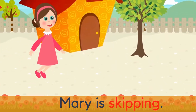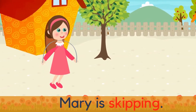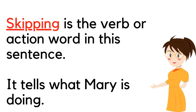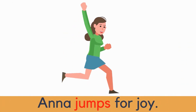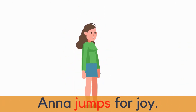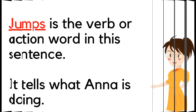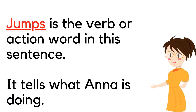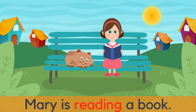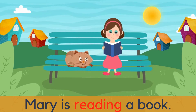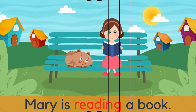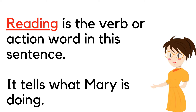Mary is skipping. Skipping is the verb or action word in this sentence — it tells what Mary is doing. Anna jumps for joy. Jumps is the verb or action word in this sentence — it tells what Anna is doing. Mary is reading a book. Reading is the verb or action word in this sentence — it tells what Mary is doing.